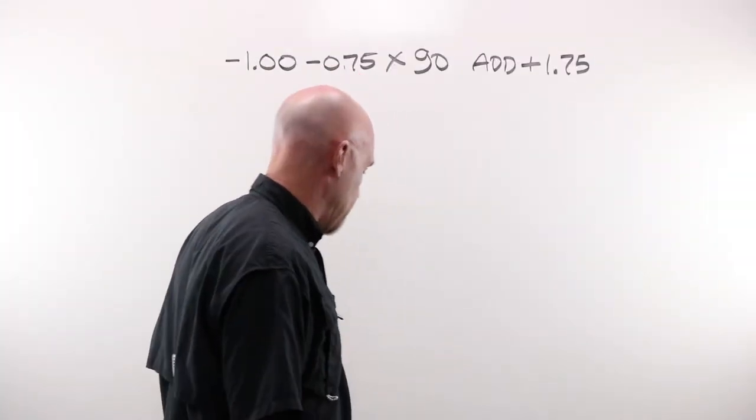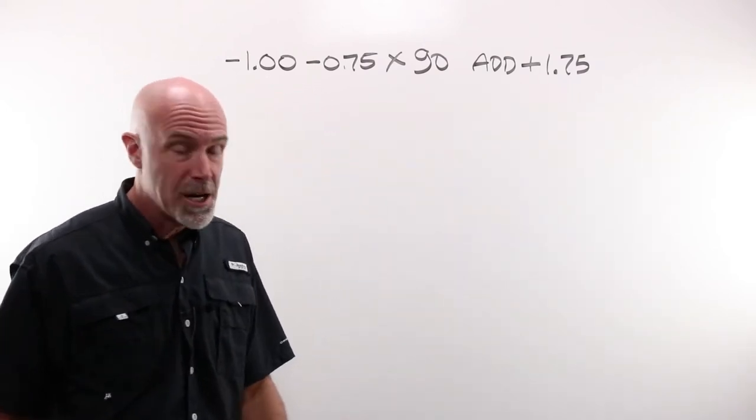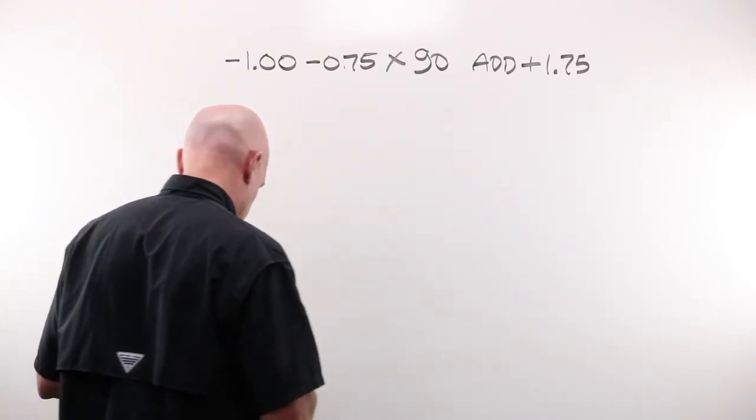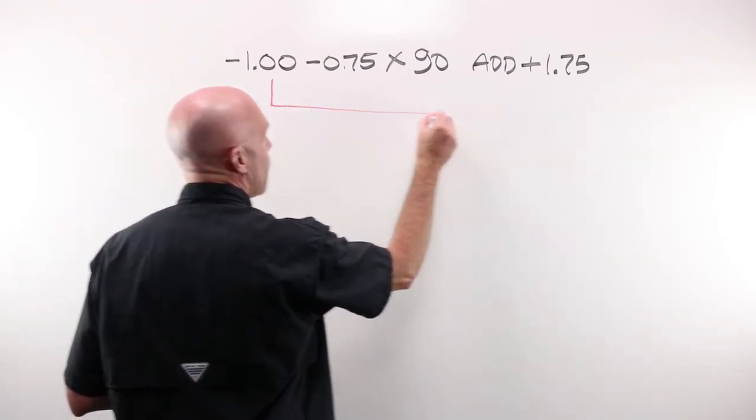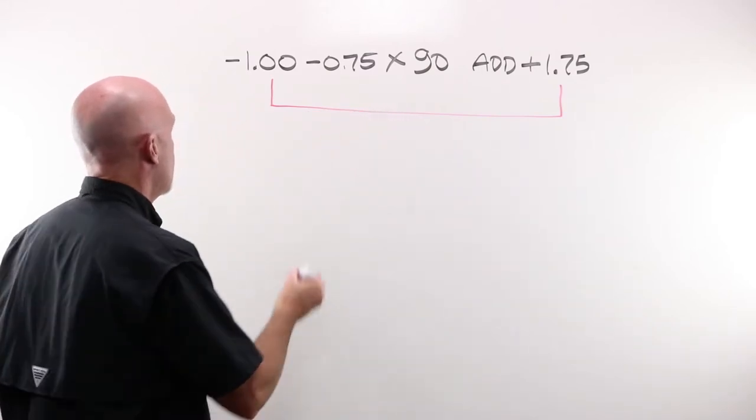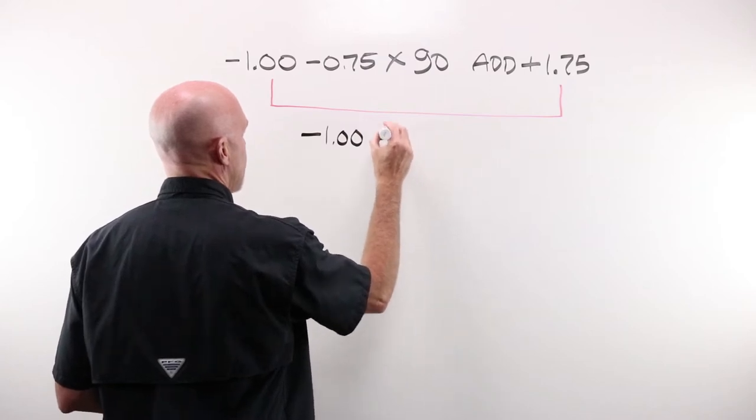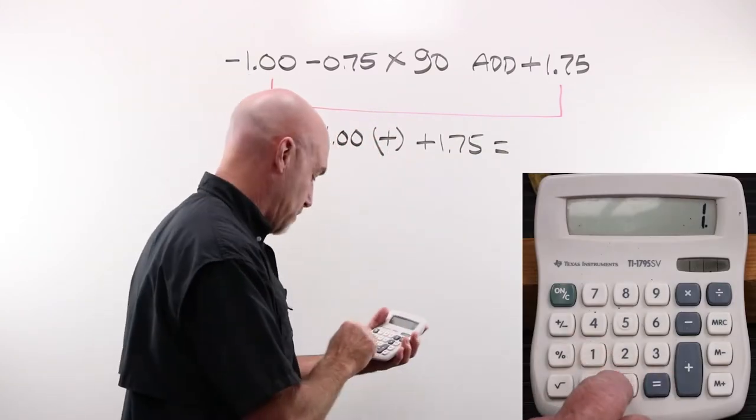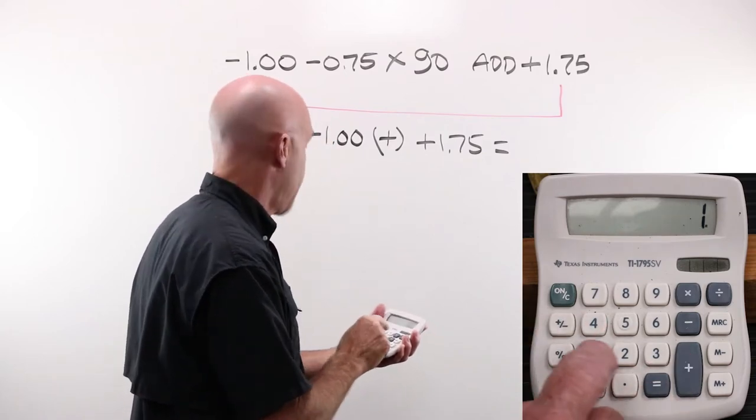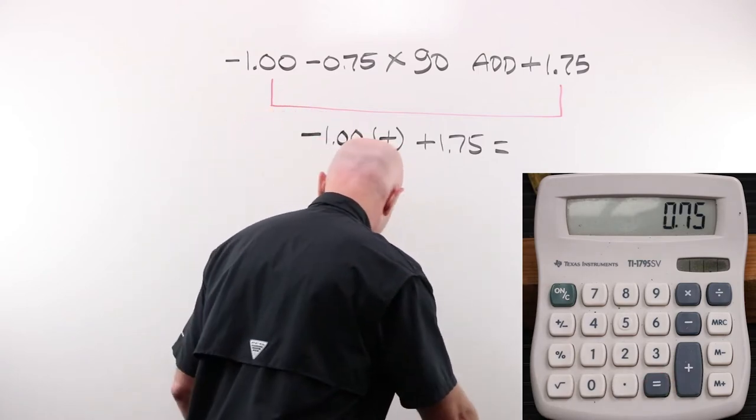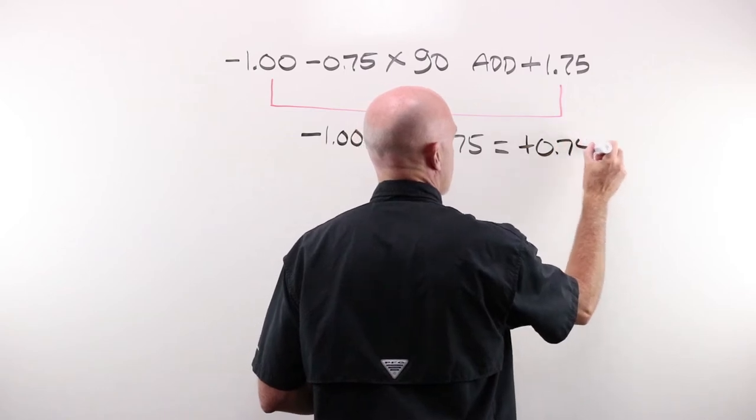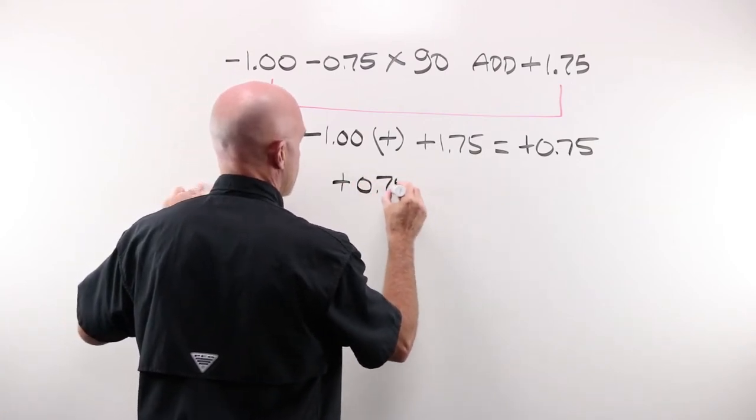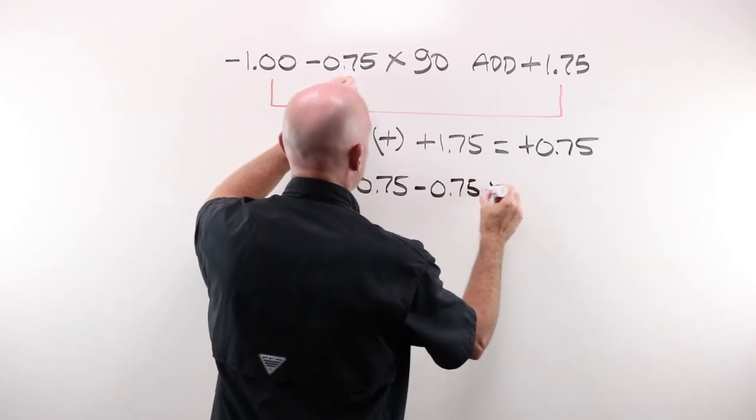Example number two, extraordinarily common numbers, extraordinarily common add power for someone just getting started with needing a reading correction. What did our formula tell us? Our formula told us that we need to add our sphere power and our add power. So we've got a minus 1.00 which we need to add to a plus 1.75. I am gonna break out my calculator. I'm gonna put in 1.00, hit the minus sign, add 1.75. And I end up with plus 0.75. To make a single vision reader from this, I'm gonna end up with a plus 0.75 minus 0.75 at 90 degrees.